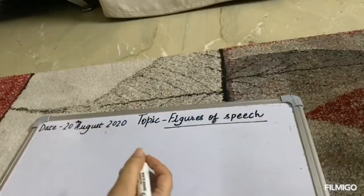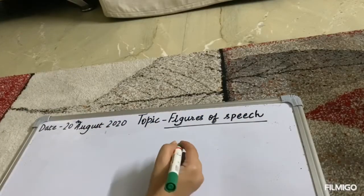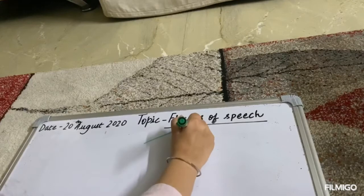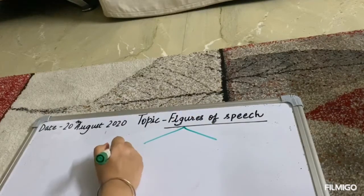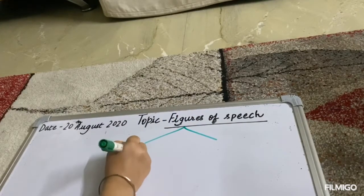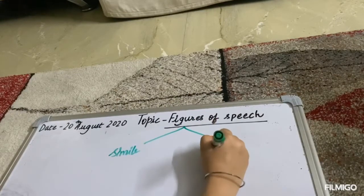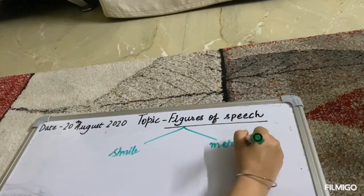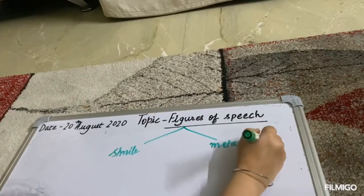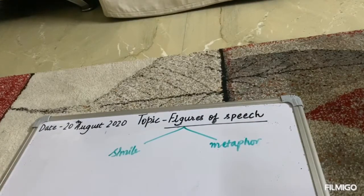Children, for today's lesson we are going to cover two elements of figures of speech. The first one is simile and the second one is metaphor. First we are going to talk about simile.